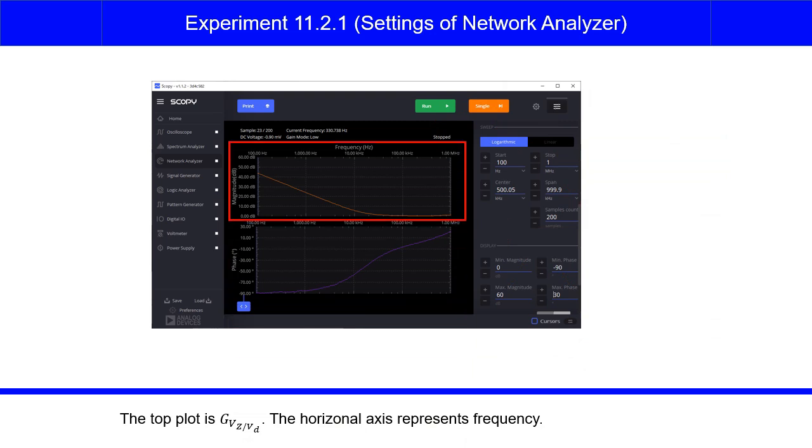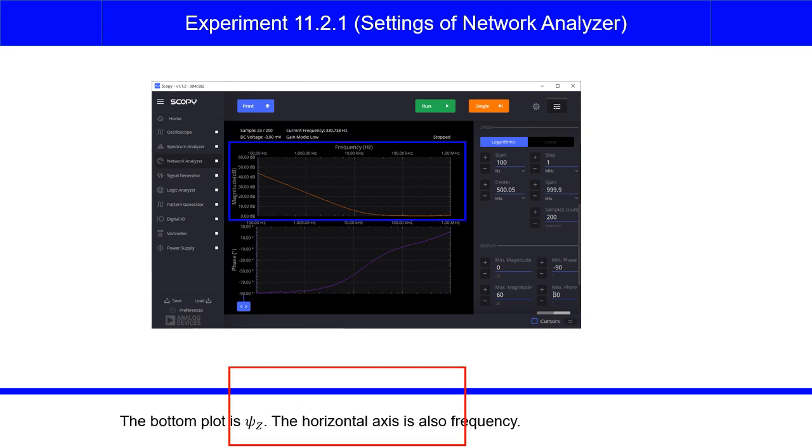The top plot is GVZ over VD. The horizontal axis represents frequency. The bottom plot is the phase angle psi Z. The horizontal axis is also frequency.